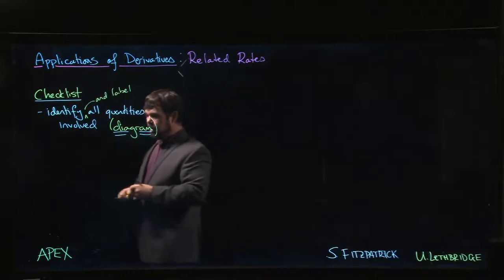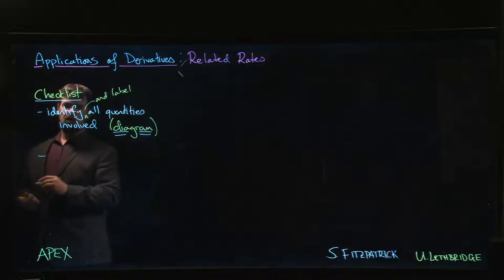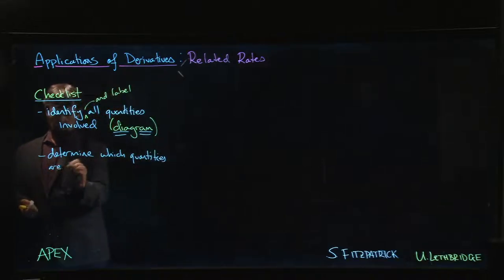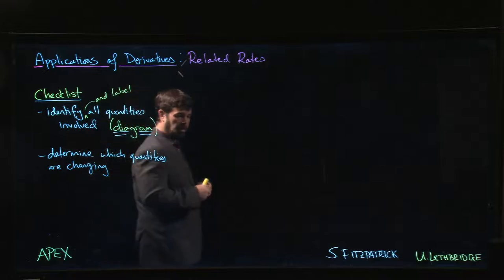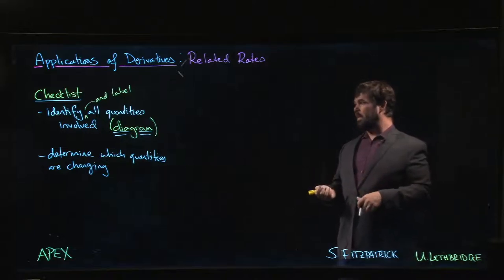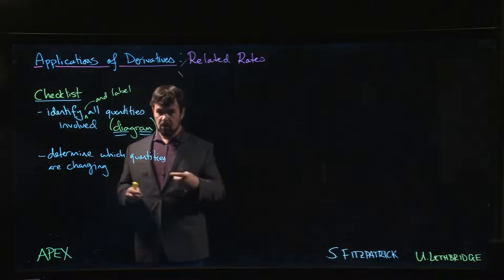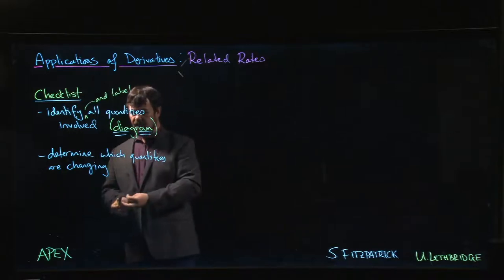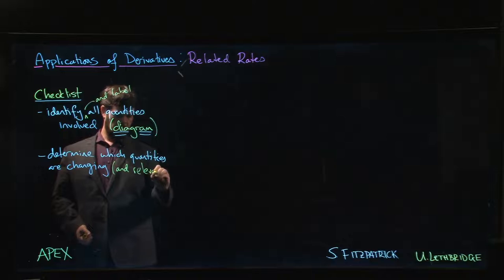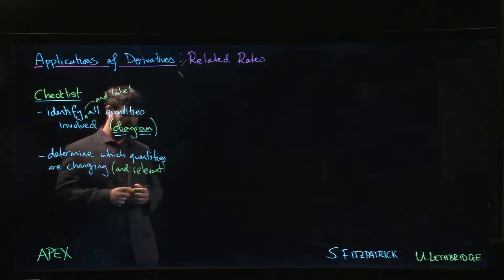The next thing you need to do is determine which quantities are changing. In a given problem, there might be all sorts of different quantities and values and numbers that are thrown at you. Some of these might be variable and need to be assigned variable names. Others might be constants, and others might be completely irrelevant to the problem.